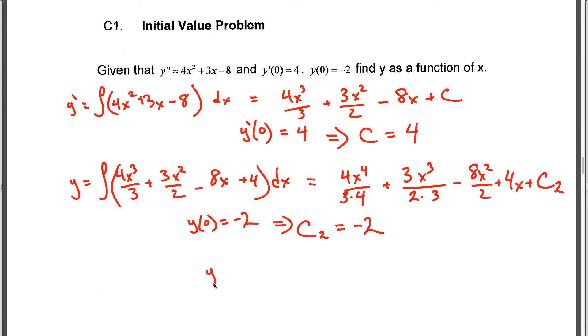And that tells us our final answer, y = x⁴/3 + x³/2 - 4x² + 4x - 2. I'm just reducing each term now. So there's y as a function of x, using all of our initial conditions to find the constants of integration.